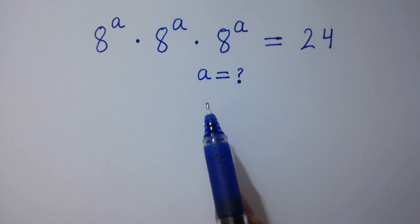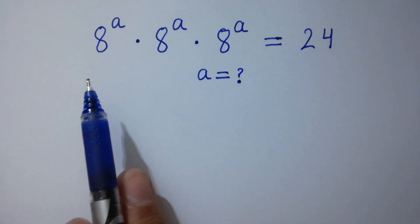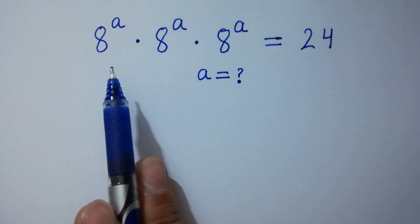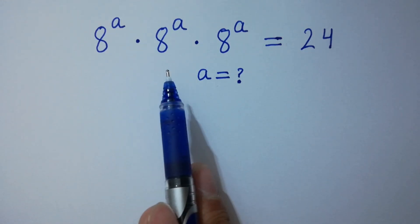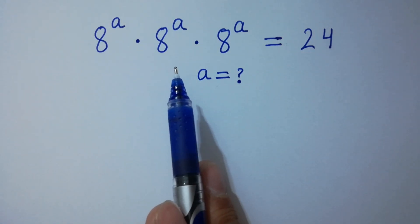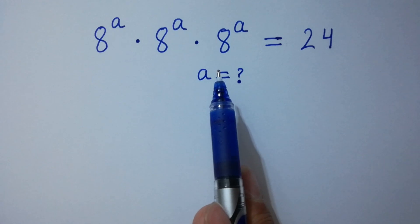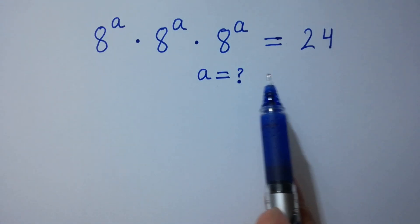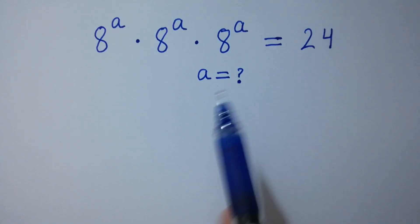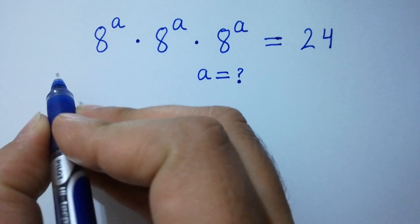Hello friends. Find the value of a if 8 to the power a times 8 to the power a times 8 to the power a equals 24. Let's have a solution.